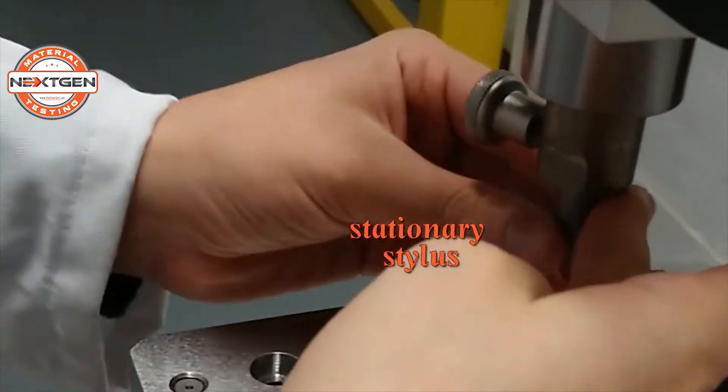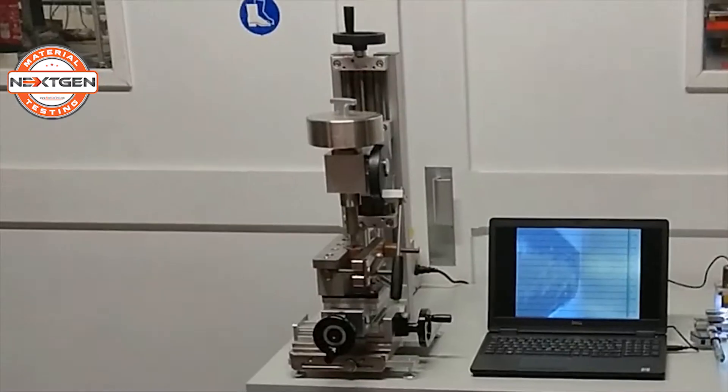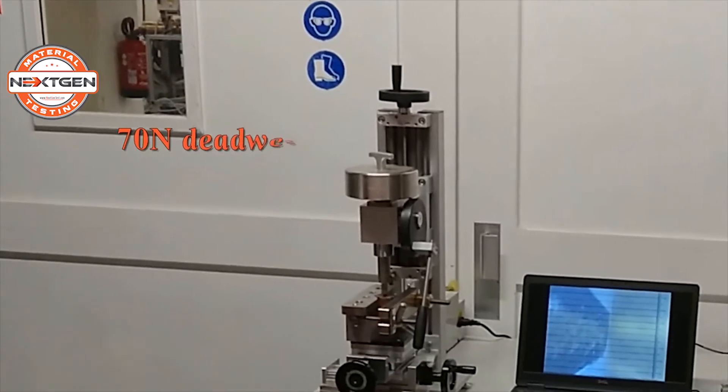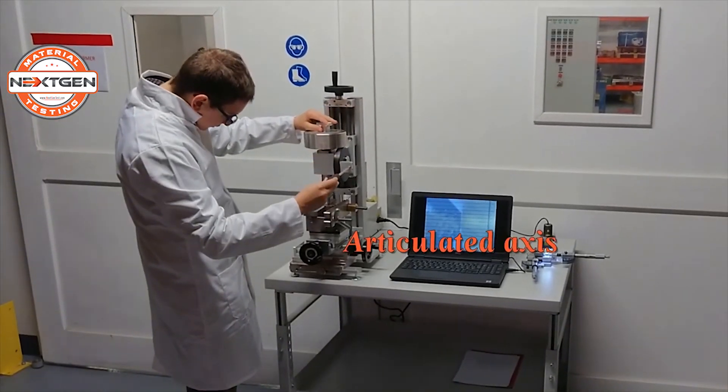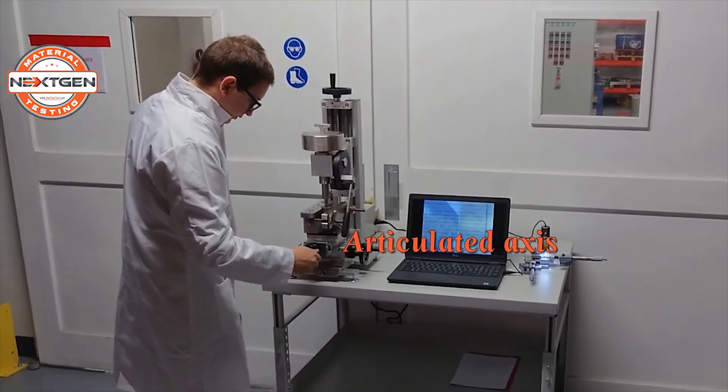The device comprises a stationary stylus and a 70 N dead weight placed on top of the stylus. An articulated axis allows the user to place the stylus on the specimen.